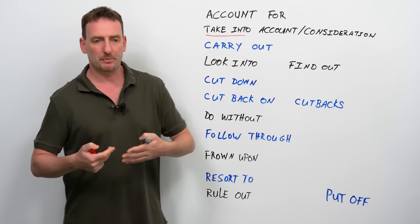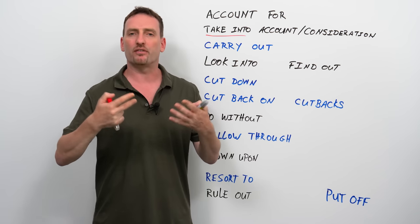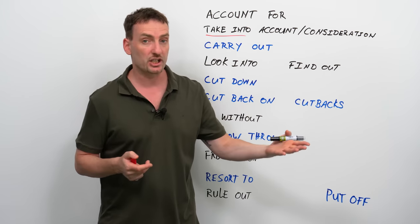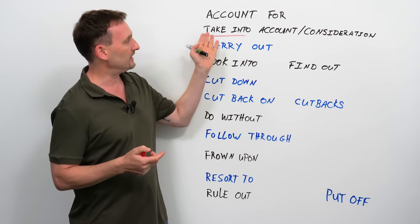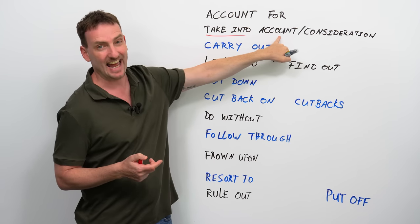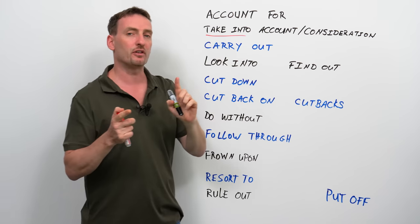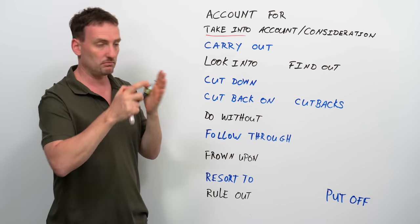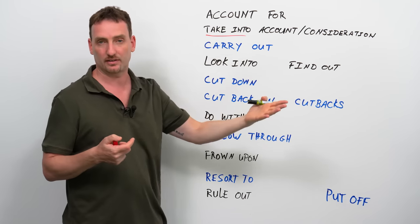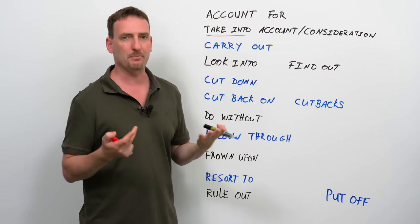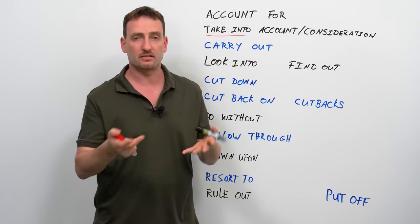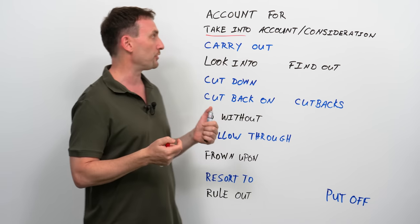Account for. To account for something means to consider it, to make it part of your thought process when you're thinking about something, especially making a plan or maybe making a budget. And basically, it means the same as take into account. Now, you have account and account. This is a noun. This is a verb, so be very careful not to mix the two expressions up somehow. So account for it. And it's also part of your calculations. That's why we have account, like an accountant does. Take into consideration an account, same idea. When you're making a plan or you're thinking about something, don't forget to include whatever it is, whatever the topic is into that thinking process.